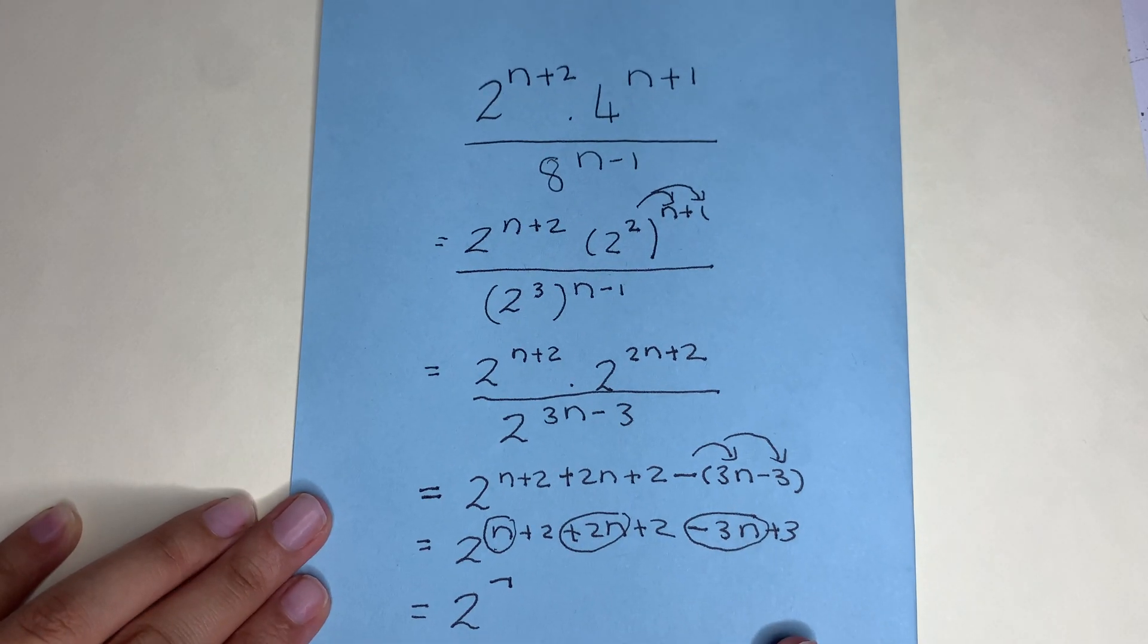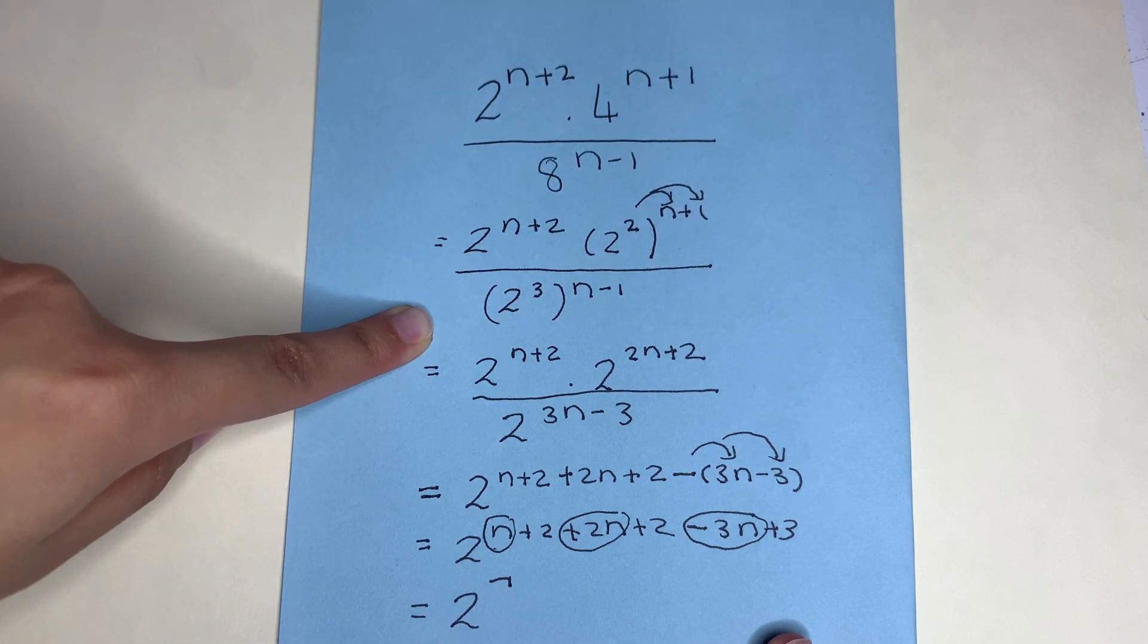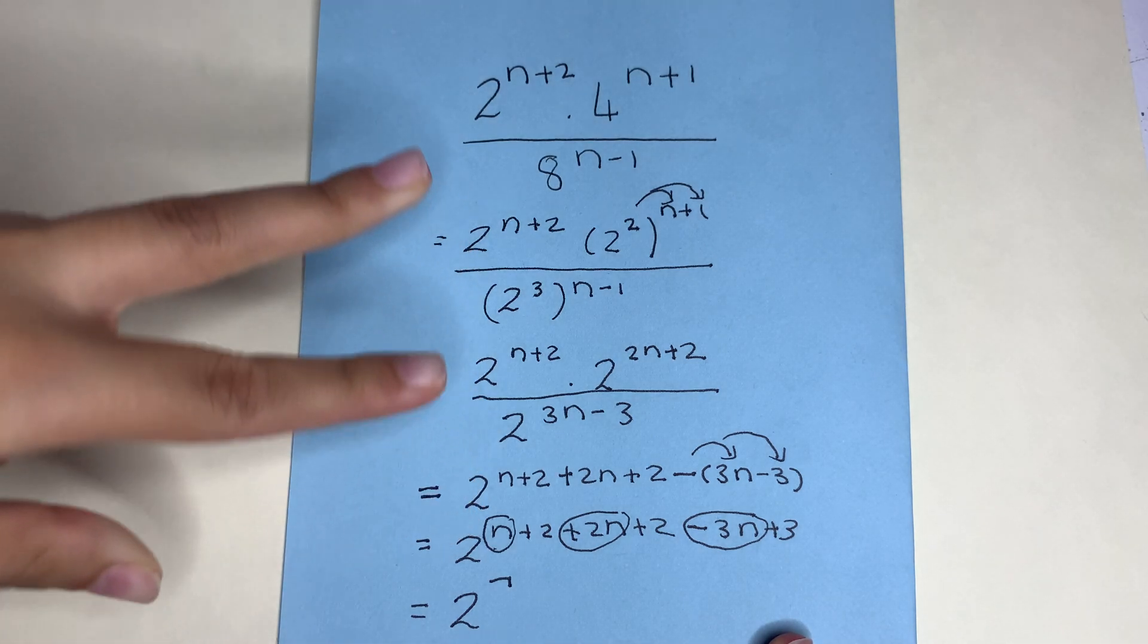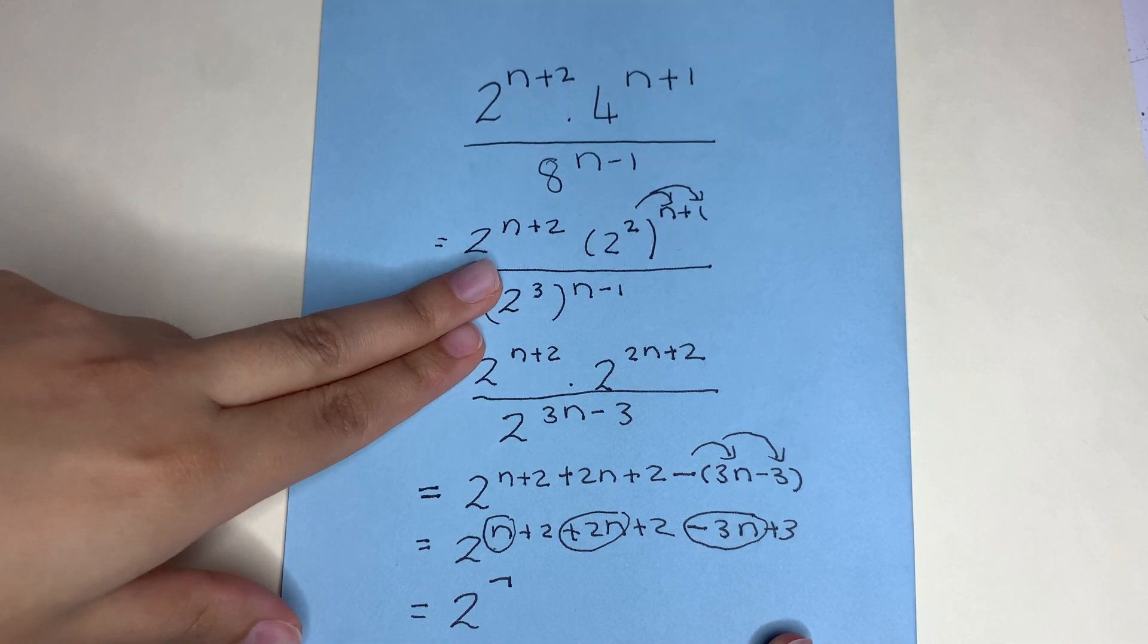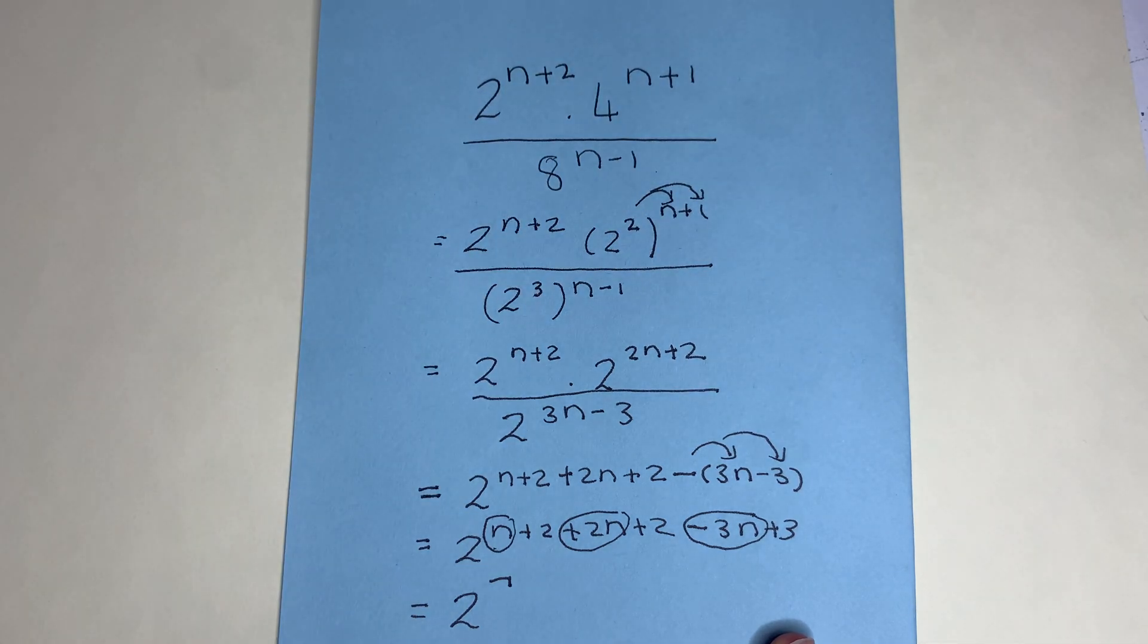So the key things to take away from this is expressing our bases as primes and accurately applying our laws of exponents. Law 1 where we add them, law 2 when we are ending up with a subtraction and when we've got exponents, 2 exponents, that rule of distribution.